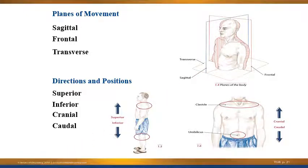When we're referring to movements, we always say movements occur through a plane. For instance, performing shoulder abduction — movement of the shoulder away from the midline where you elevate the arm — takes place in the frontal plane. If we're referring to shoulder flexion, where we bring the arm straight up, that occurs in the sagittal plane. If we do shoulder rotation, that occurs in the transverse plane. Pretty much all rotational movements will occur in the transverse plane.